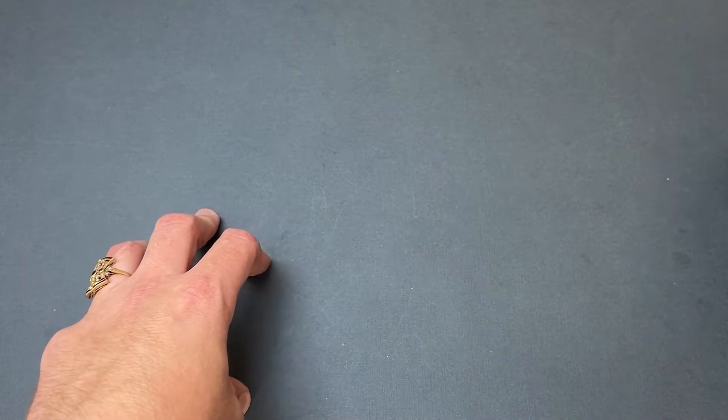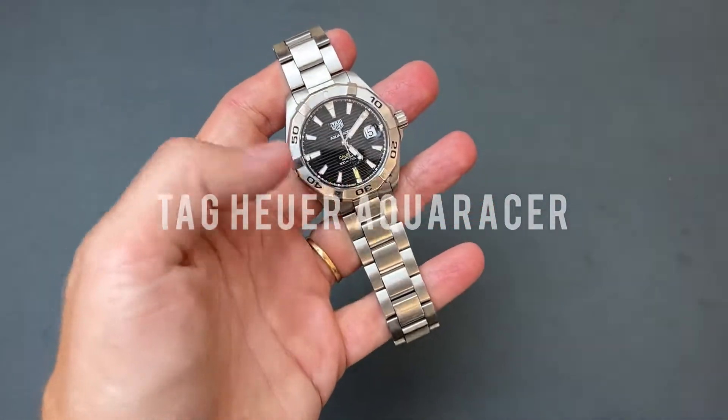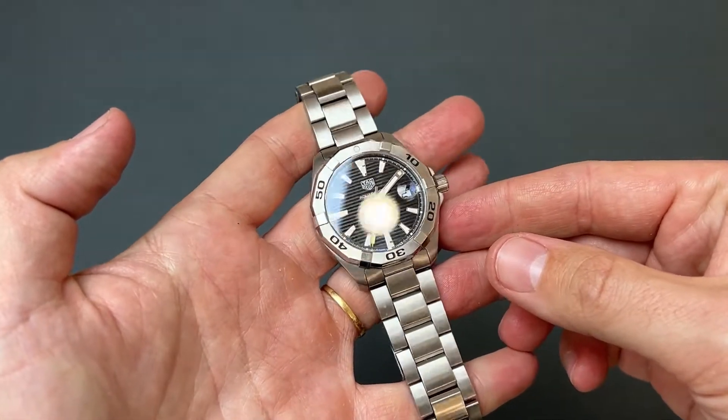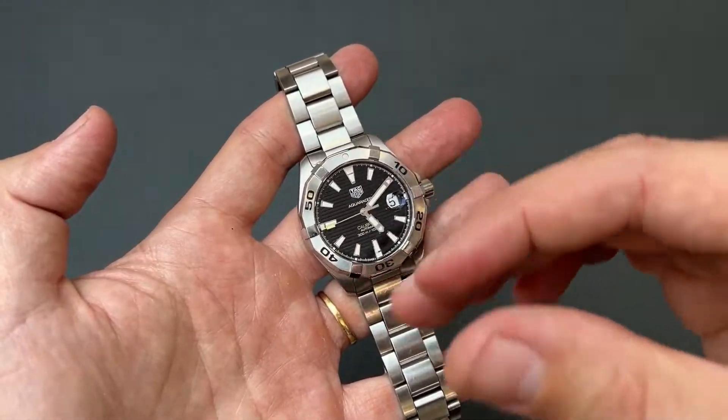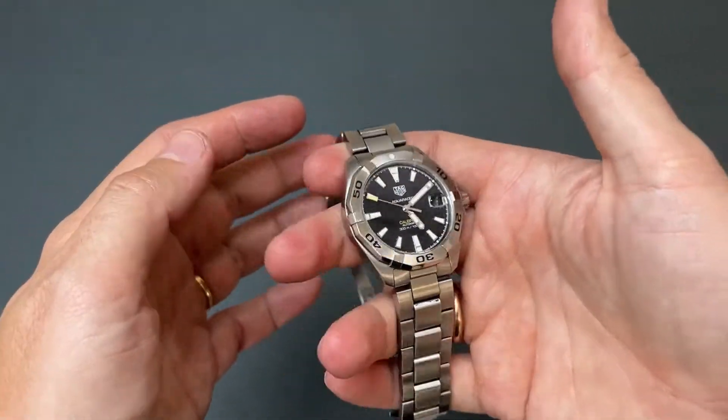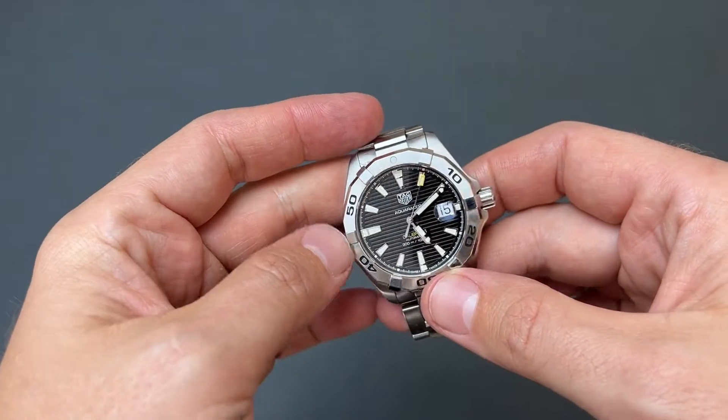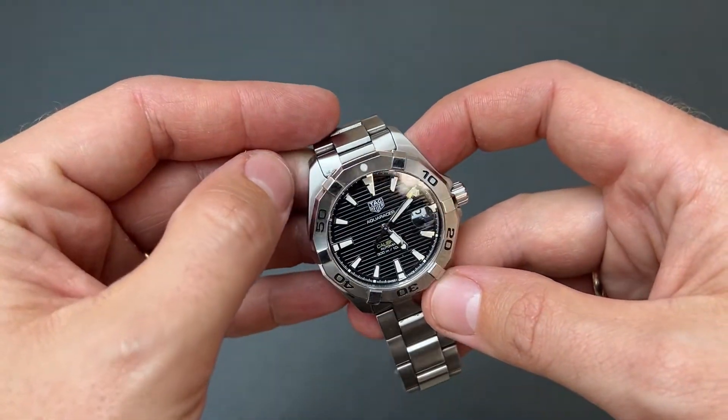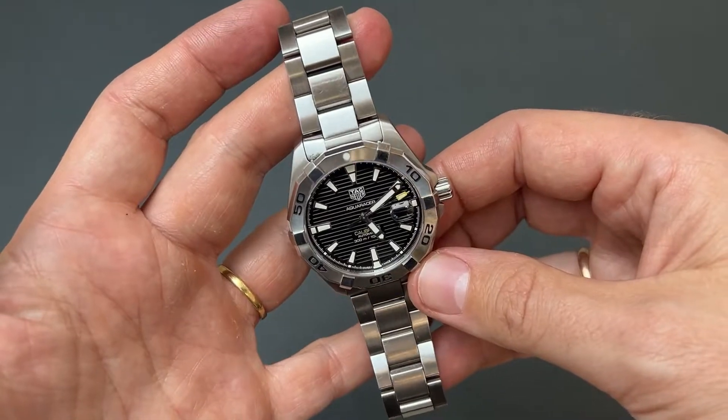If you ask me about the watch, what's on my hand right now. This is my Tag Heuer Aquaracer Caliber 5. I wear it every day. I like the design. I like how it fits. It's heavy. Of course I can only imagine myself diving 300 meters into the ocean, but it says that I can.